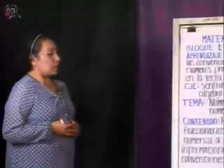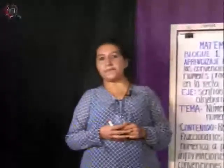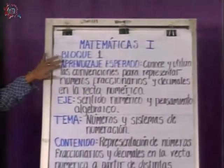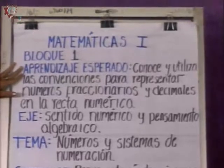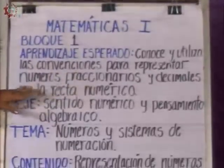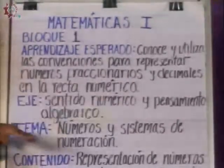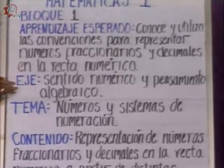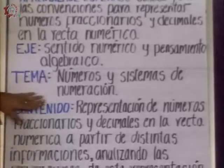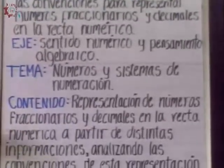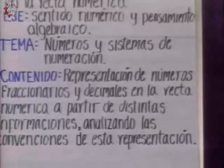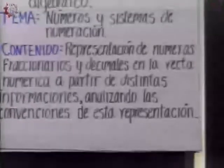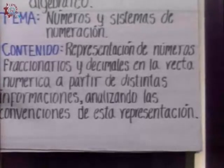As I mentioned, I belong to the subject of Mathematics. In the first block of Mathematics for first grade, one of our learning expectations is to know and use the conventions to represent fractions and decimal numbers on the number line. This is within the subject of numbers and algebraic expressions. The topic is numbers and numeration systems, and the content is the representation of fractions and decimal numbers on the number line from different information, analyzing the conventions of this representation.